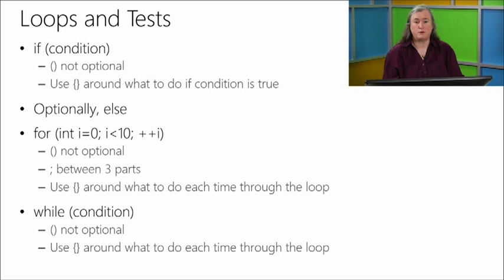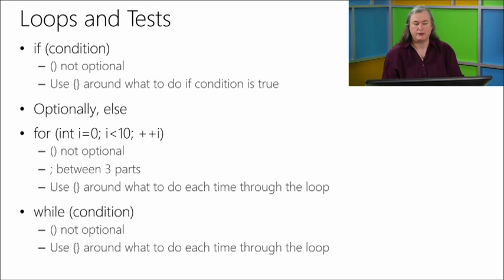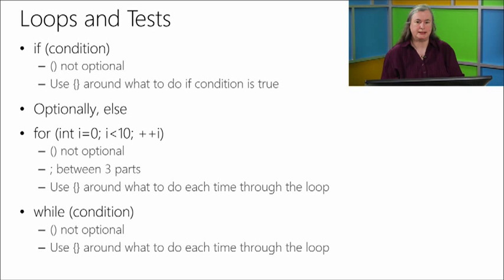The other building block is to do something over and over again. There are at least four ways to do this. We'll start with the for loop. The keyword is for, all lowercase — all C++ keywords are always all lowercase. The round brackets are not optional, and then there are three pieces inside with semicolons between them. A common beginner mistake is to put commas between them — that's not an error, because comma is legitimate C++ punctuation, but you don't get the result you want. The first piece is how to get started, the second is how to know whether you're done, and the last is how to move on. You use braces around the stuff you want to do each time through the for.